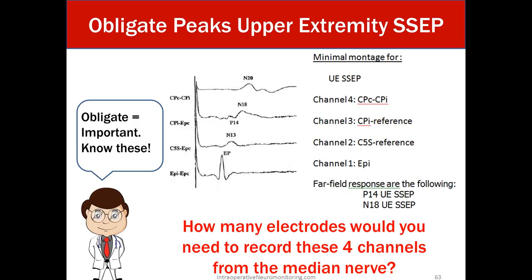To record these four channels from the median nerve, you'd need one electrode for each ERBs point (two total), one over the cervical spine (three), one over each cortical area (five), plus a ground electrode.